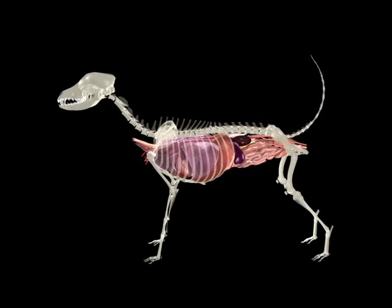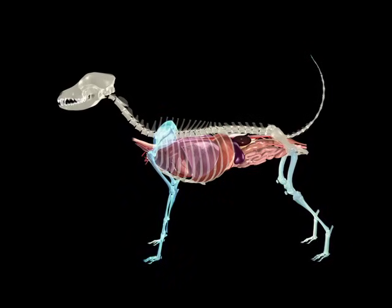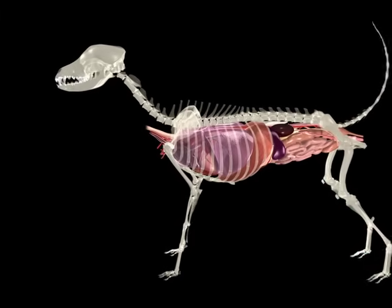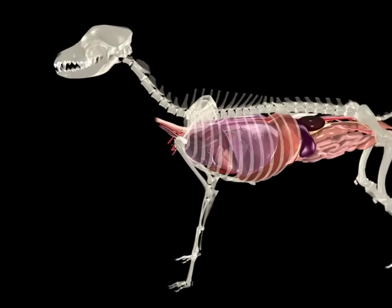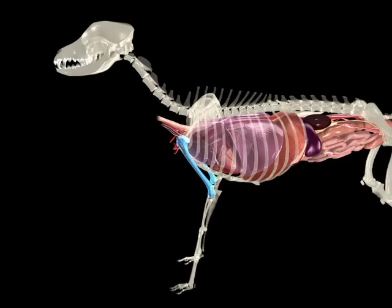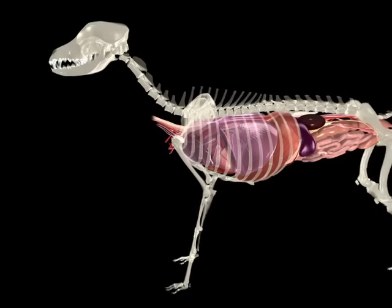The relevant skeletal components include the skull, cervical, thoracic, lumbar, and coccygeal vertebrae, ribcage, pelvis, and bones of the thoracic and pelvic limbs. The thoracic limbs include the scapula, humerus, radius, ulna, carpus, metacarpus, and digits.